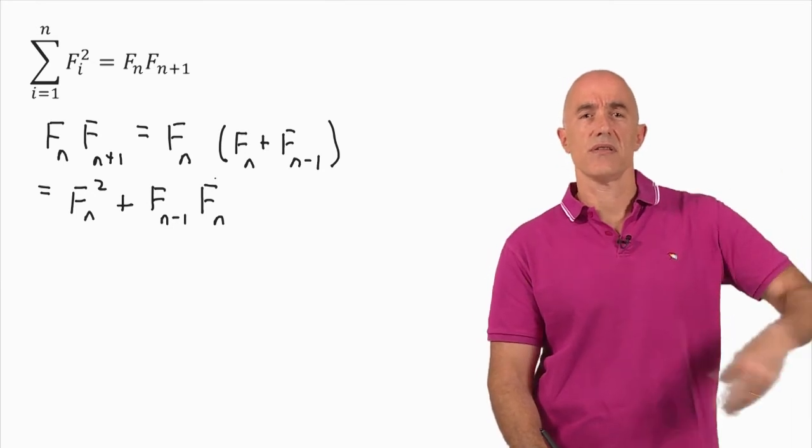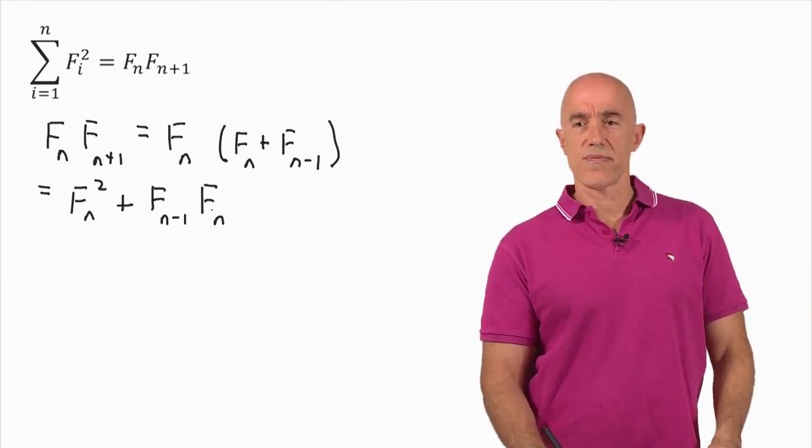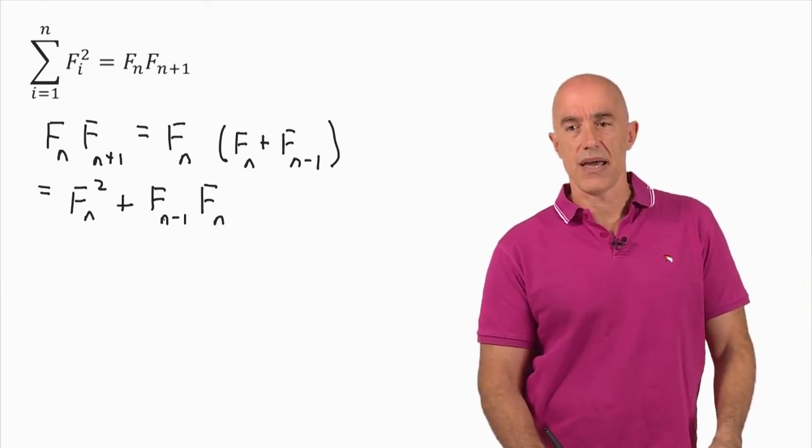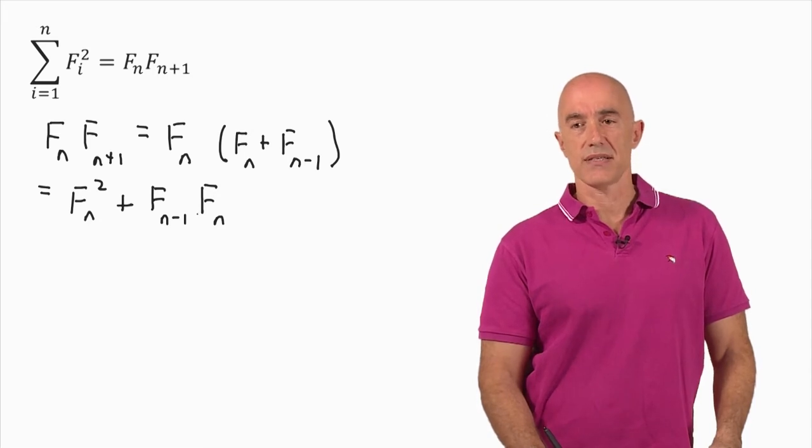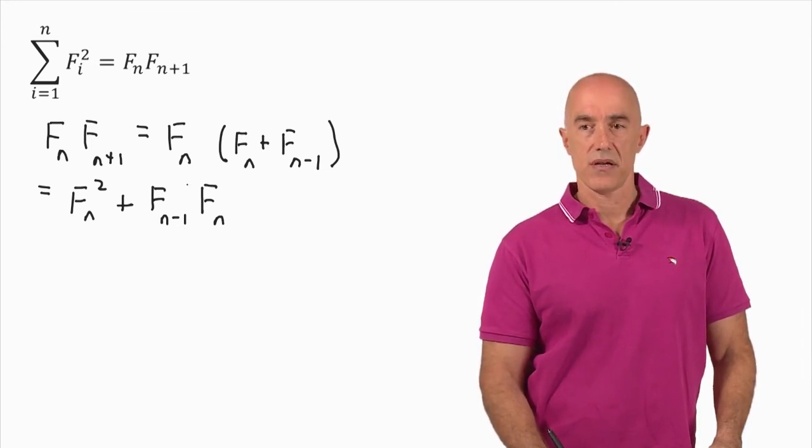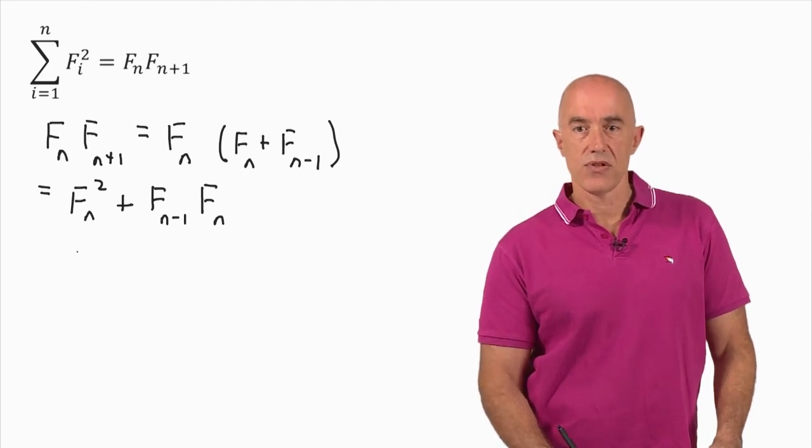And we can continue. We can do this over and over again. We replace Fn by Fn minus 1 plus Fn minus 2. So then we'll have an Fn squared plus Fn minus 1 squared plus the leftover, right? And we can keep going.